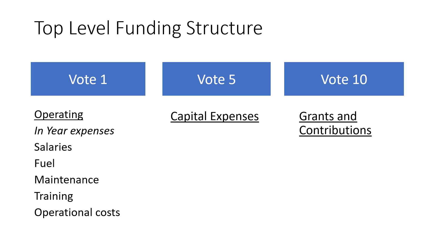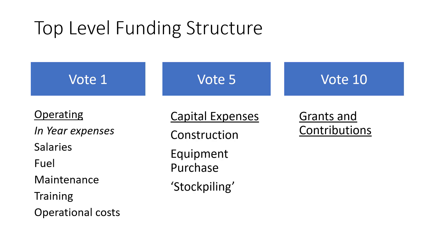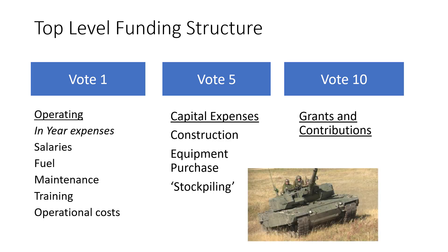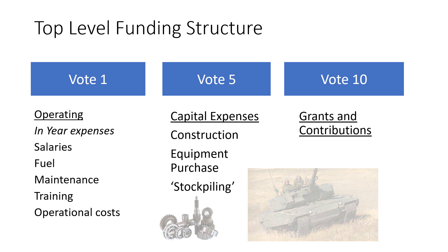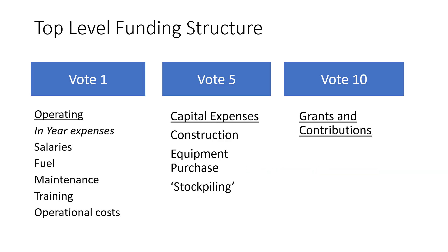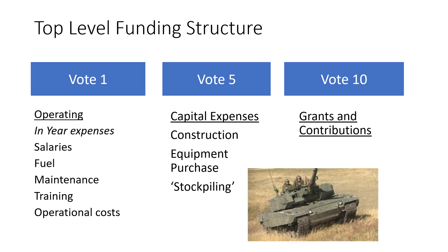Capital expenses, on the other hand, are money spent on things that are meant to last. This would include constructing a new building, purchasing equipment such as a new tank, or stockpiling. Stockpiling would mean, for example, if you bought a new tank, you might also buy 10 or 15 years worth of spare parts. Since you're not expecting to use them up in that one year, those would be a capital expense. On the other hand, if that same tank was broken and needed a spare part right now, fixing that tank would be a maintenance activity, and so purchasing that spare part right now would be a Vote 1 operating expense.